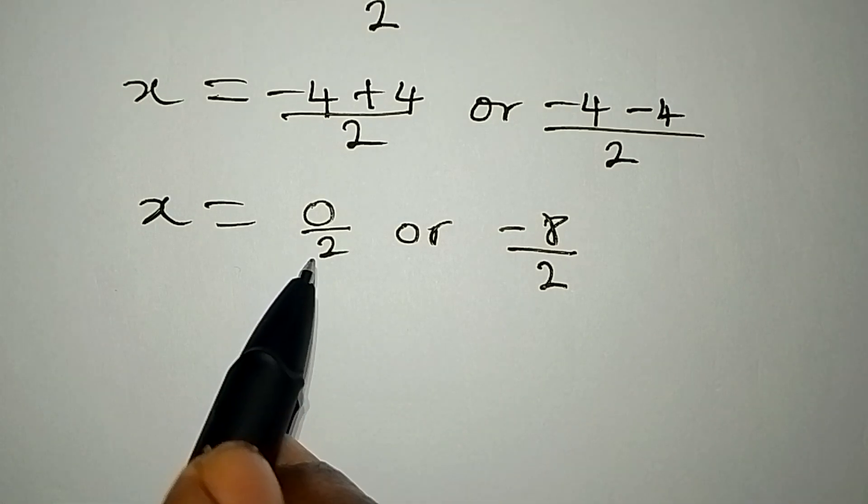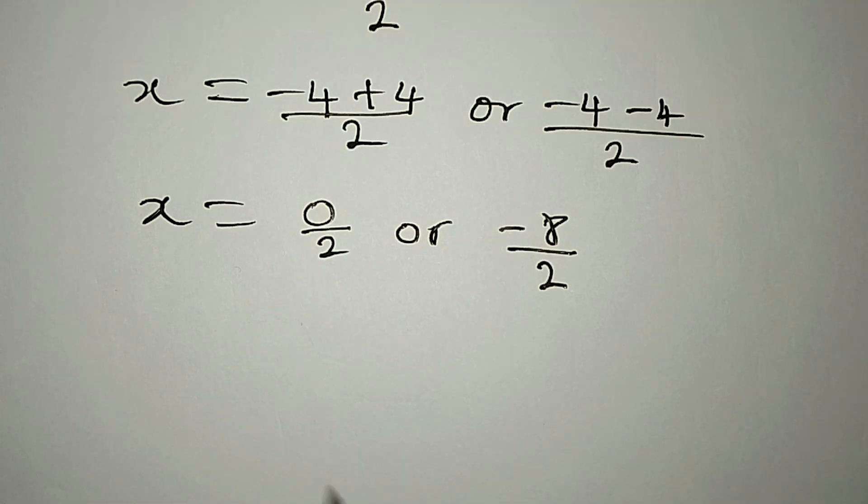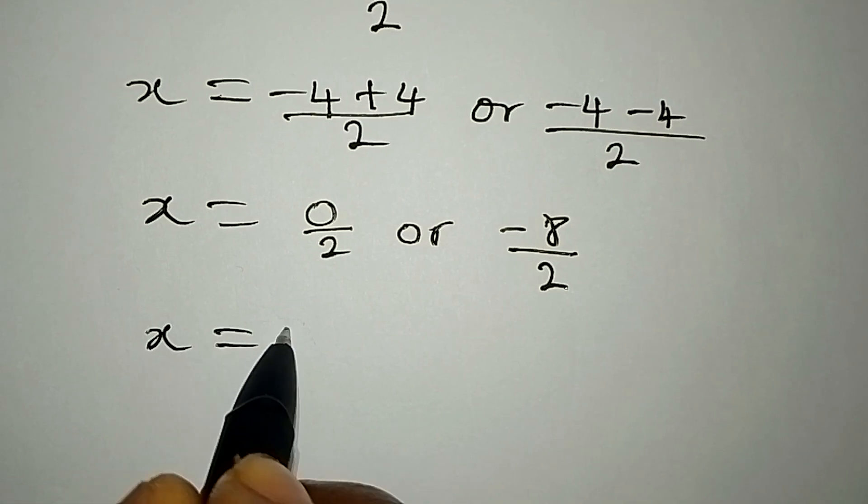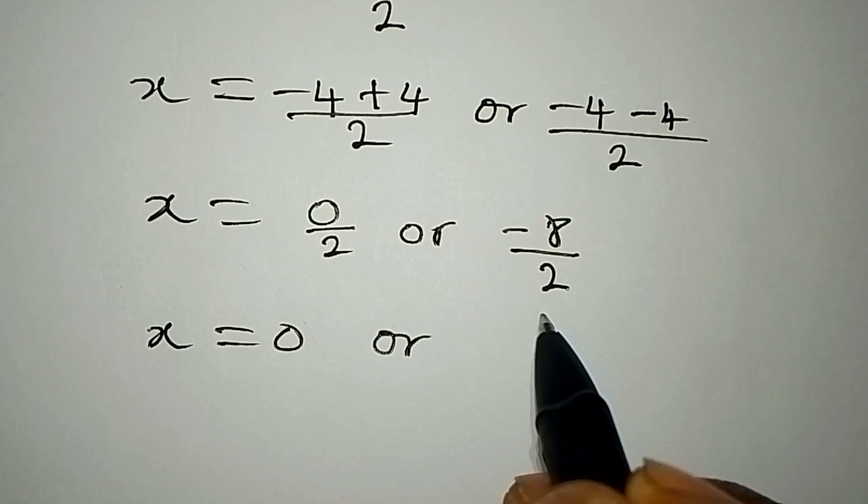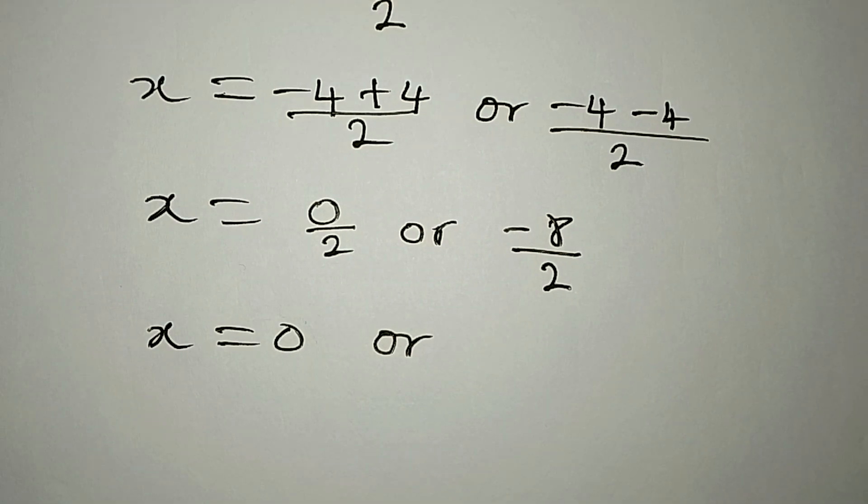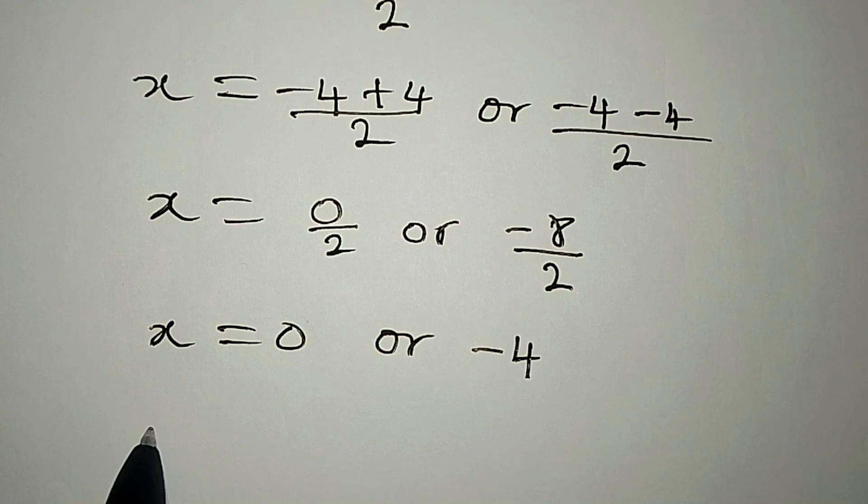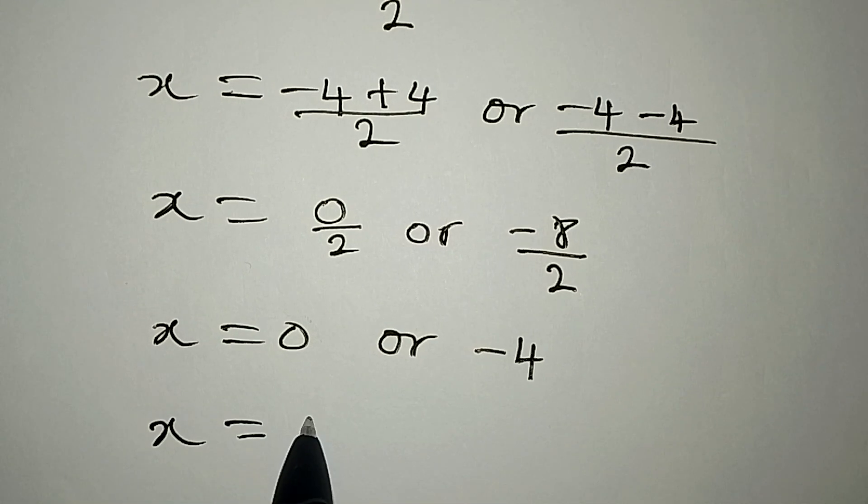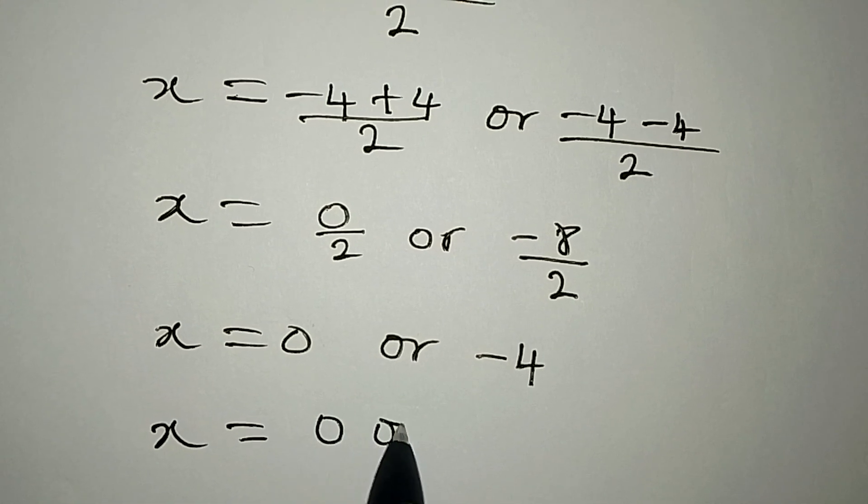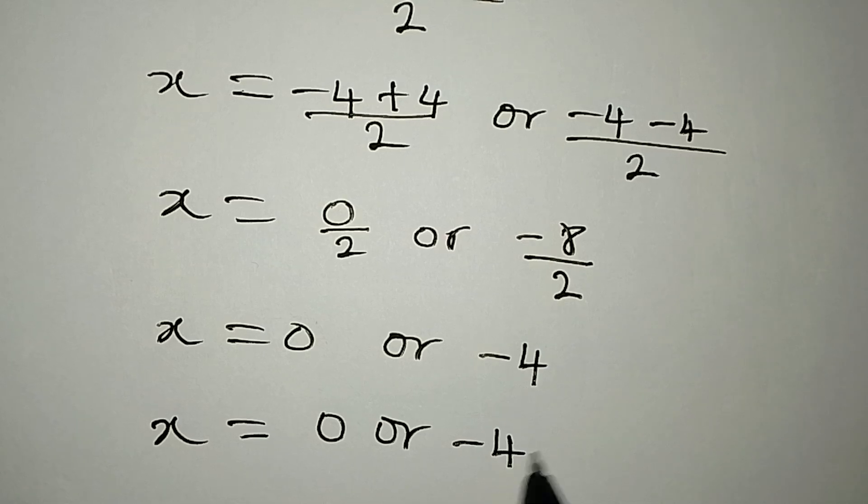And then do not forget that 0 over 2 is defined and then it is equal to 0. Or on this side, minus 8 over 2 will give minus 4. Therefore x is equal to 0 or minus 4.